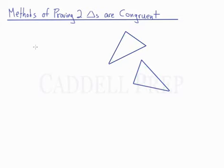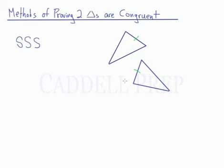The first method of proving that two triangles are congruent is side, side, side — we'll call it SSS. What we have to do is prove that this side is congruent to this side, this side is congruent to this side, and this side is congruent to this side. If we can prove that, then we can prove that the two triangles are congruent.